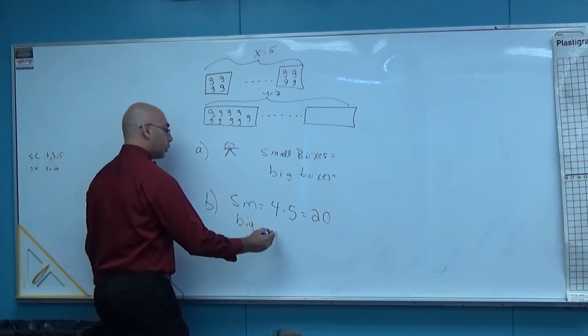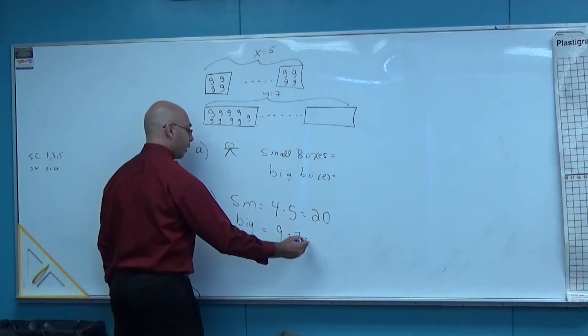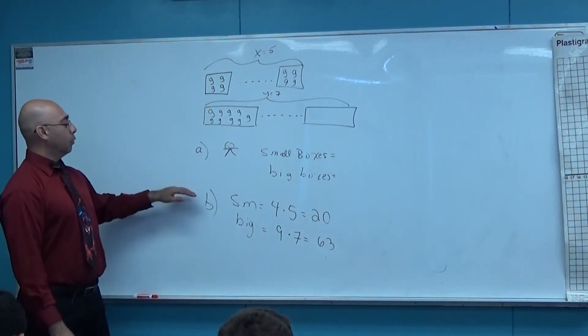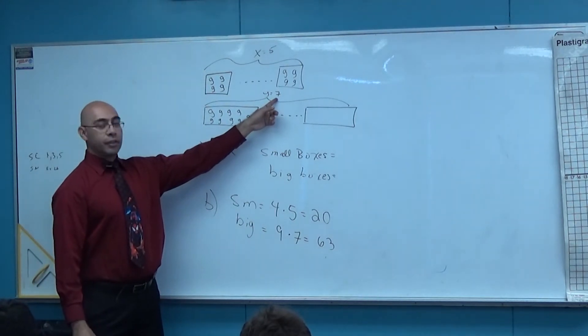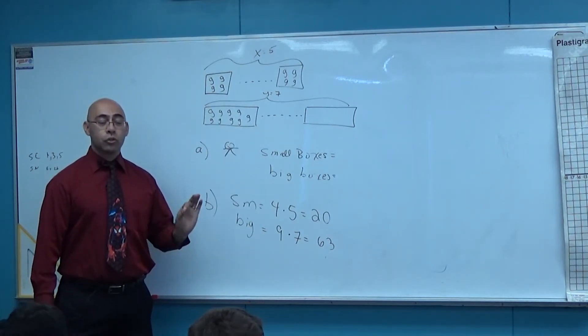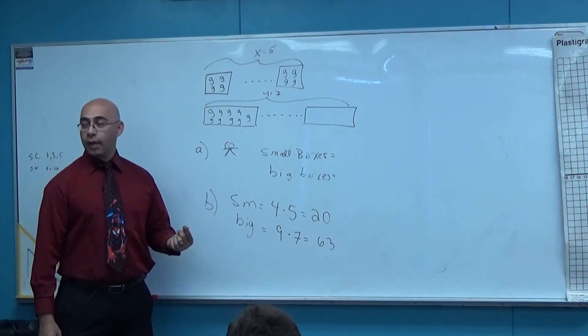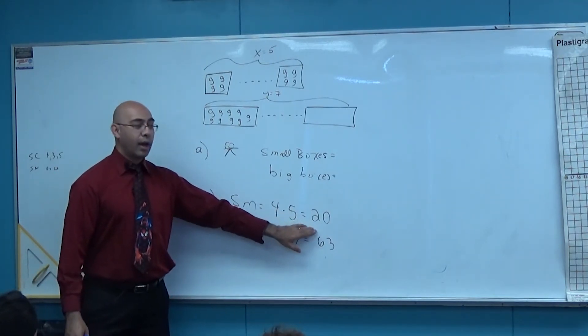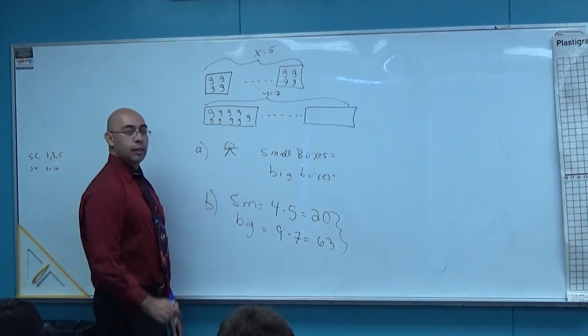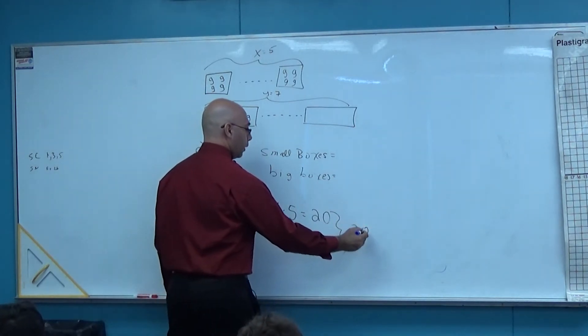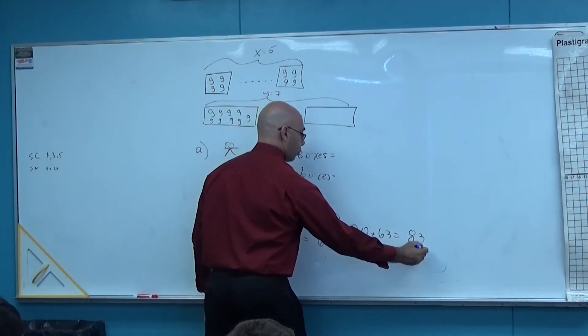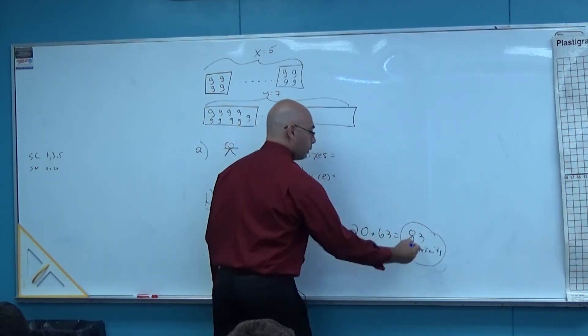Okay, any questions on where the four, the five, the nine, and the seven come from? Do you understand where they come from? They tell you in part B that there are seven big boxes and five small boxes. You should be looking at B and looking where it tells you that. So how do I figure out how many total grapefruits I have here? What should I do with this 20 and that 63? Yes sir, I add it. 20 plus 63 equals 83 grapefruits.